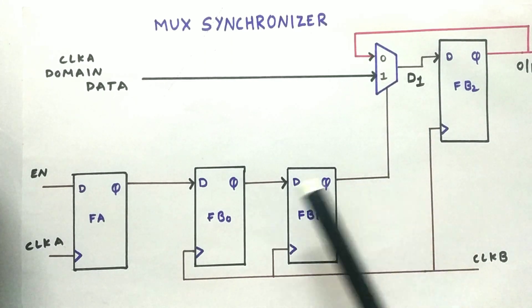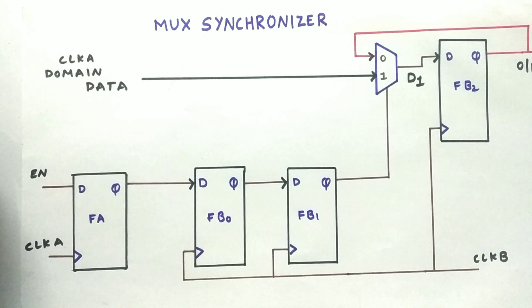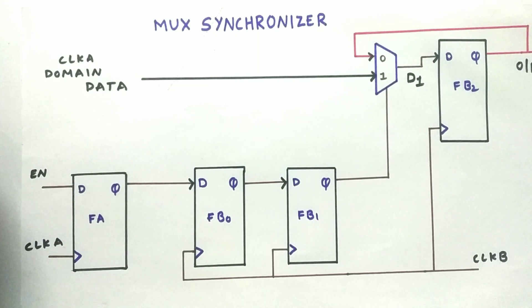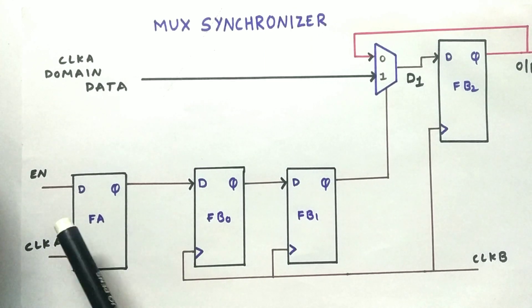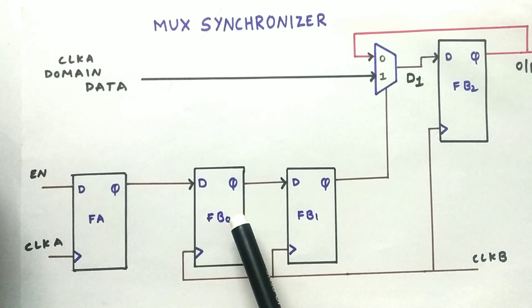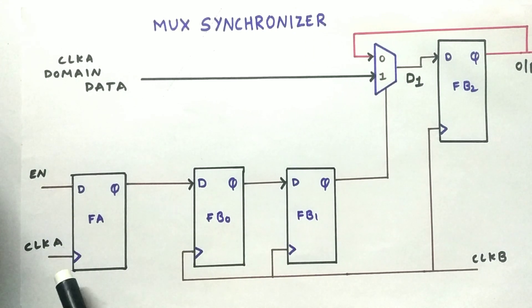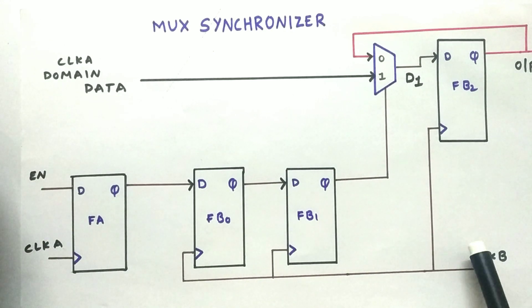That is fed to one and we have a select line. This select line is coming from a control signal enable. This enable says when should we send the data from clock A to clock B domain. So here this enable passes to a two-flop synchronizer. This two-flop synchronizer, as you can see over here, we are converting the enable signal from clock A domain to clock B domain.